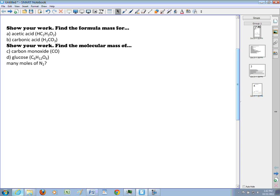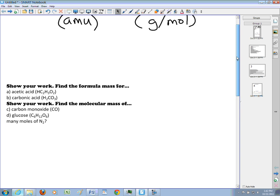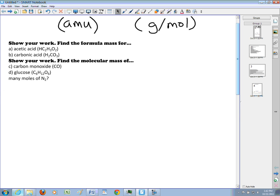In the guided notes, we have a couple questions. I've copied those questions - I'm just going to move them up so they're easier to read here. We'll do a couple examples. I'll ask you to show your work. Part A: find the formula mass for acetic acid. When you find the formula mass, you just need to look at which atoms are present in that compound.